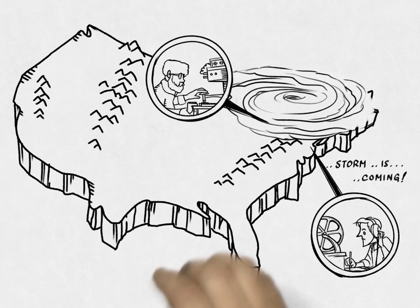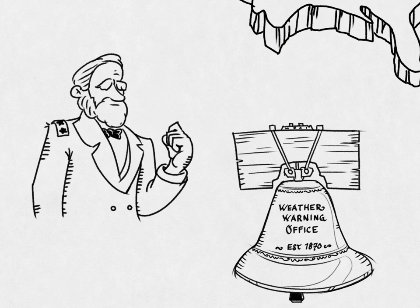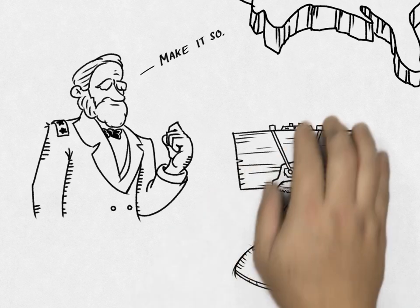So President Ulysses S. Grant established a Weather Warning Office in 1870. This was our very first U.S. weather service.